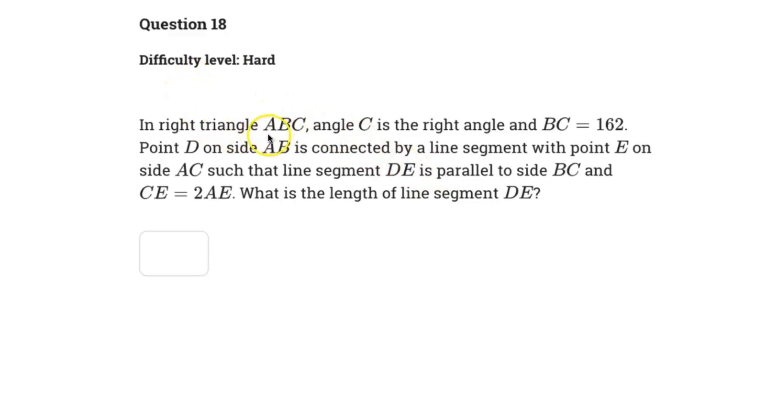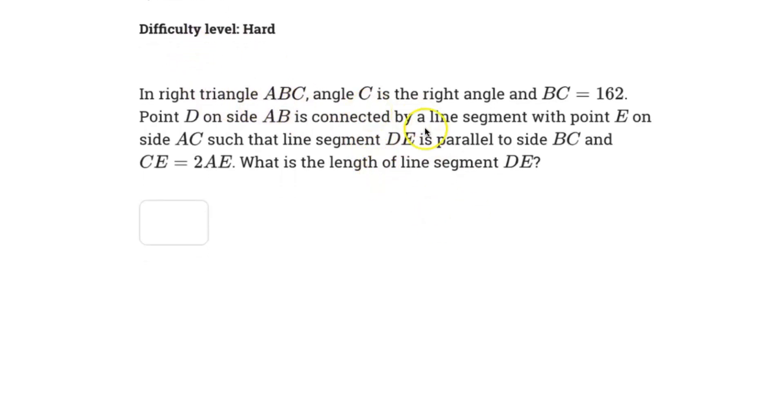This one says in right triangle ABC, angle C is the right angle. So let's draw out our triangle. It's a snazzy triangle right there. Angle C is the right angle, and it doesn't really matter what the other sides are. So ABC. It says side BC has a value of 162. Let's label that. And point D on side AB, so on AB there is a point D. It's connected by a line segment with point E on side AC. So on AC there's a point E.